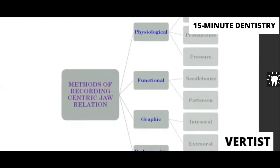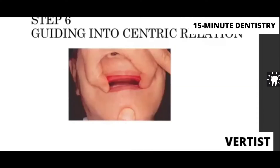There are several methods of recording centric relation: physiologic, functional, graphic, and radiographic. Out of these, you're going to use the method which comes under the physiologic classification, and we're going to see what that method is.